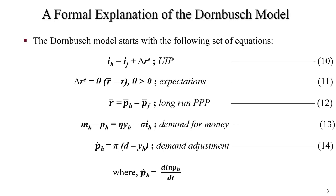Equation 14, the price adjustment equation which says that the rate of inflation is determined by the gap between aggregate demand and aggregate supply. P dot H equals pi times D minus YH. Here, P dot H equals the rate of inflation, pi equals the speed of adjustment, D equals the log of aggregate demand, and YH equals the log of domestic real income or capacity output or aggregate supply.